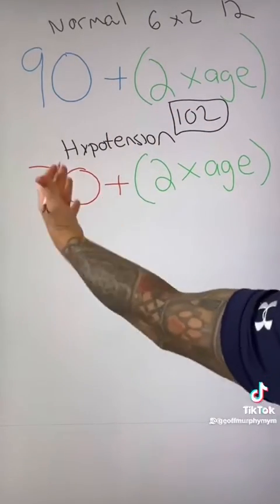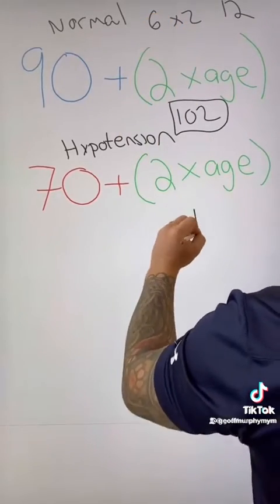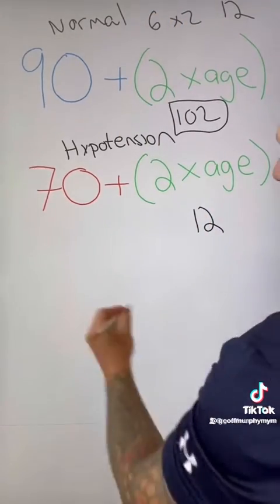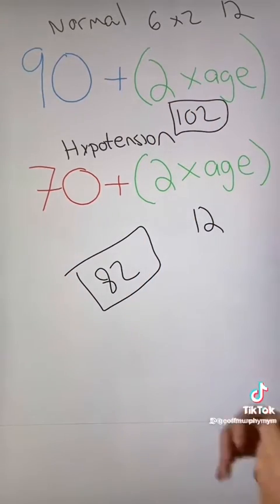For example, if you're looking at hypotension, what's going to be hypotension? Well, 6 times 2 is going to be 12 again plus 70. Anything below 82 systolic is going to be considered hypotensive for a 6-year-old.